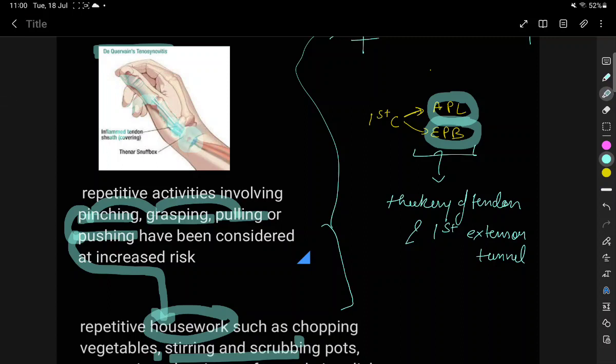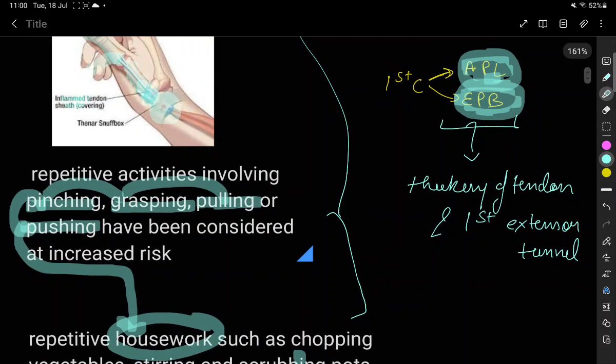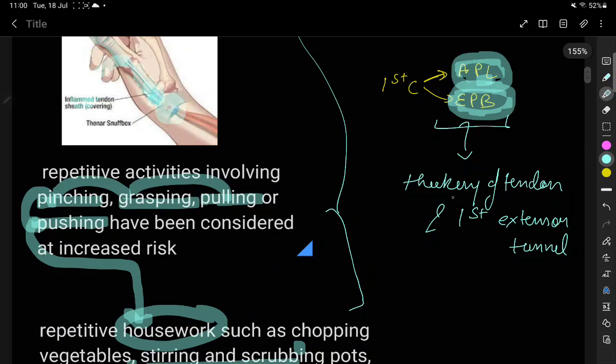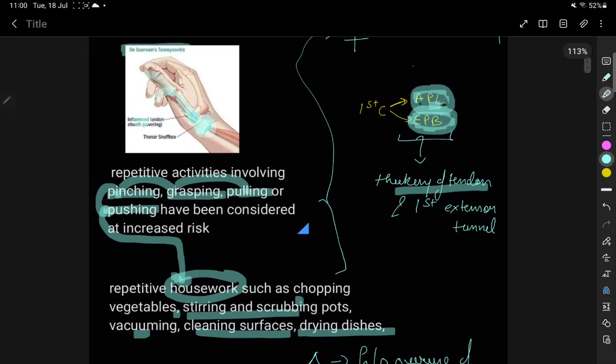The first extensor compartment is where the abductor pollicis longus and extensor pollicis brevis pass. Because of the overwork of these two tendons, we have thickening of the tendon, and the tunnel through which it passes also thickens. This repetitive activity in household work is common.